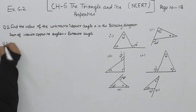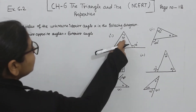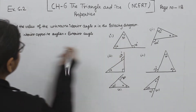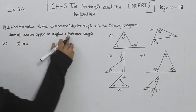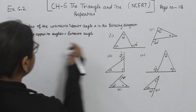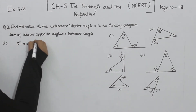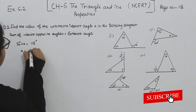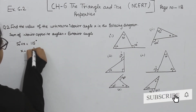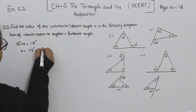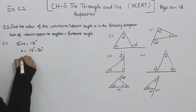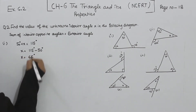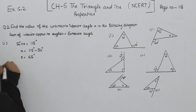Starting with part 1: the interior opposite angles are 50 degrees and x, and the exterior angle is 115 degrees. So x is equal to 115 minus 50, which gives x equal to 65 degrees.